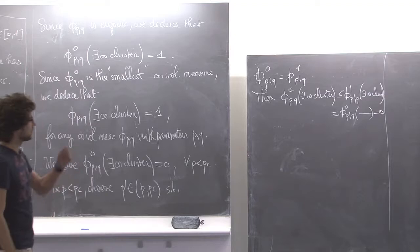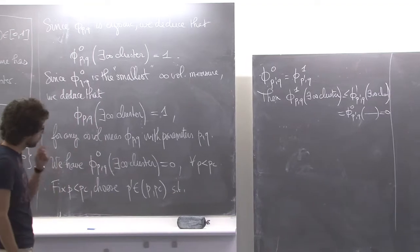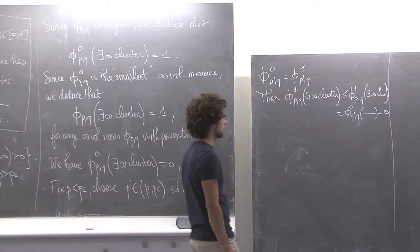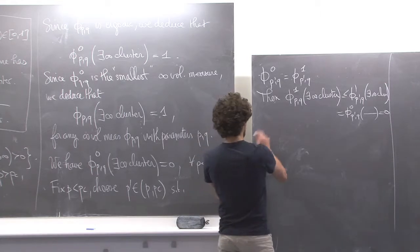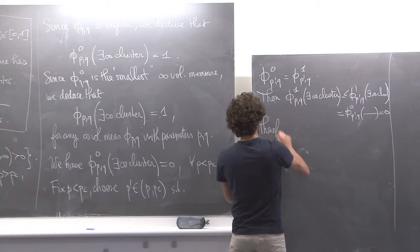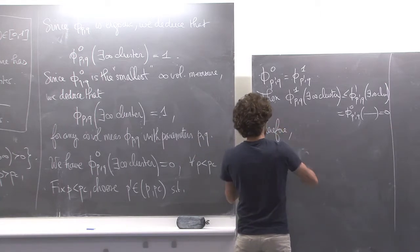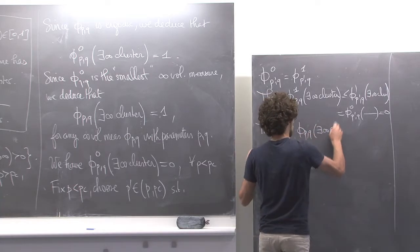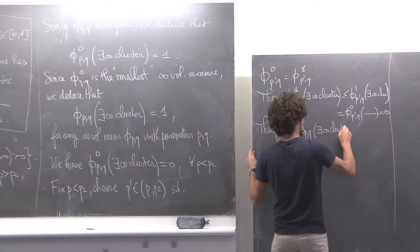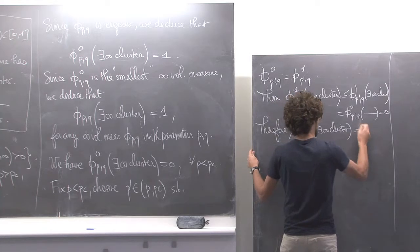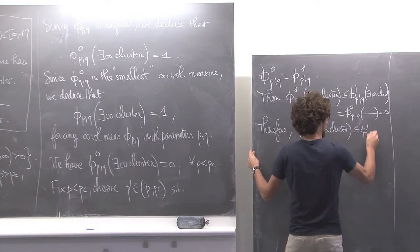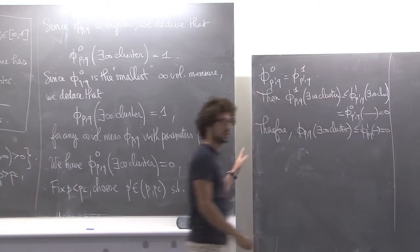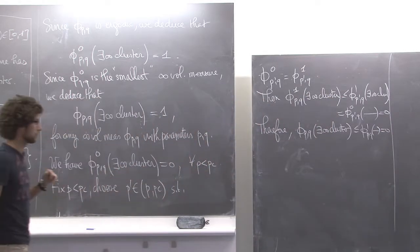So at parameter (P,Q), you also know that phi_1(P,Q) of the existing infinite cluster is 0. And therefore, phi(P,Q) of the existing infinite cluster is smaller than phi_1, which is 0. So this is the end of this proof.